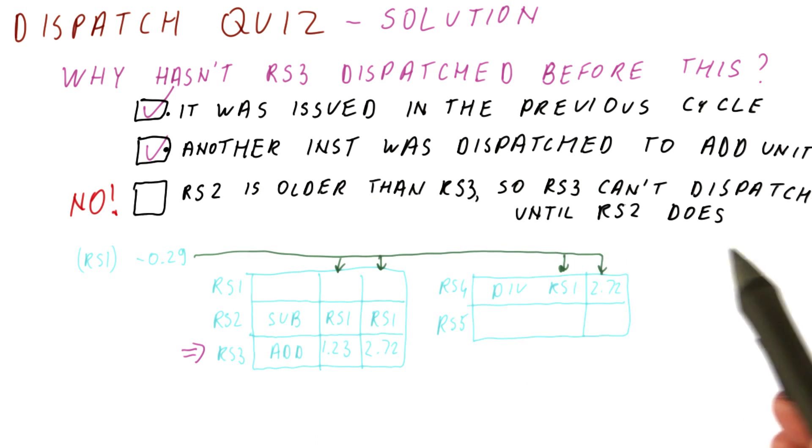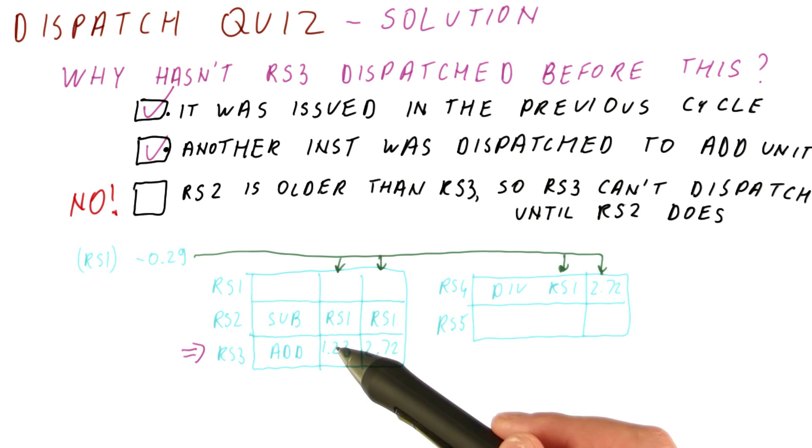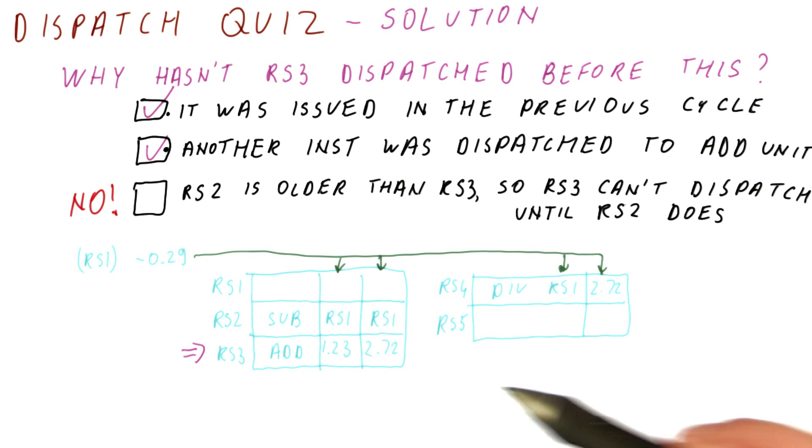If we were concerned about this, when the operands are ready, we still don't dispatch the instruction, then we would have an in-order processor, which we don't want. Actually, the reason why this is an out-of-order processor is because